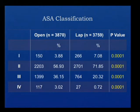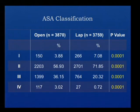Looking at ASA classification, there were almost 57% in ASA class 2 and 36% in ASA class 3 in the open group, compared to 71% in ASA class 2 and 20% in ASA class 3 in the laparoscopic group.